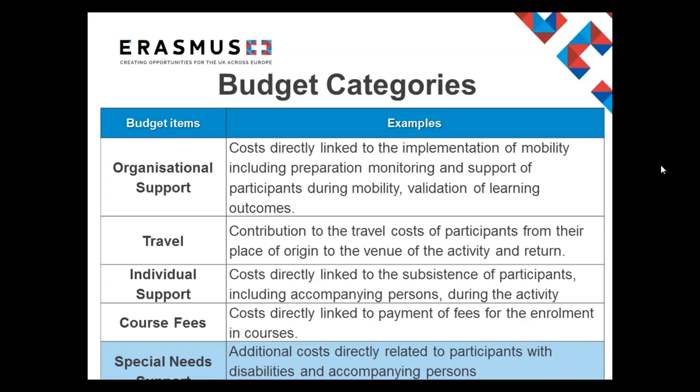In addition to that, if the participant has additional needs due to disability, you can also claim additional costs to enable them to take part. This could be as simple as the requirement to rent a mobility scooter to support the participant during the placement, right up to requesting additional funds to support an accompanying person to travel with them to enable them to take part in the programme.